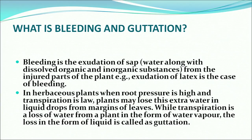What is bleeding and guttation? Transpiration is the process of water loss in the form of water vapor through stomata, cuticle and lenticels. Bleeding is the exudation of sap — water along with dissolved organic and inorganic substances — from injured parts of a plant; exudation of latex is a case of bleeding. In herbaceous plants, when root pressure is high and transpiration is low, plants may lose extra water as liquid drops from the margins of leaves. While transpiration is loss of water in the form of vapor, this loss in the form of liquid is called guttation.